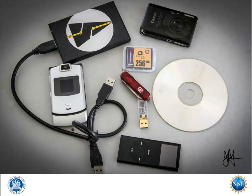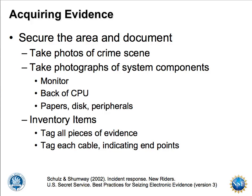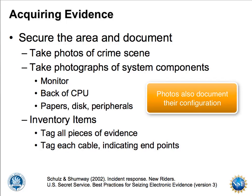One of the easy ways to start documenting the crime scene is to take a camera or a cell phone camera and start taking photos. Law enforcement usually uses a dedicated camera for this. You want to document the crime scene to show where everything was at the time you found it. It's also good to take photographs of system components — a monitor, the back of the CPU, papers, disks, peripherals — so you can document that those devices were there and whether they were connected or not.